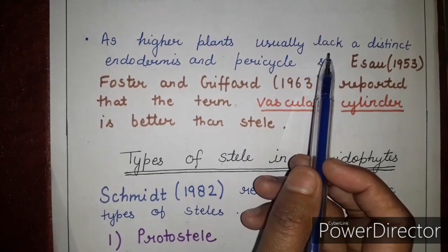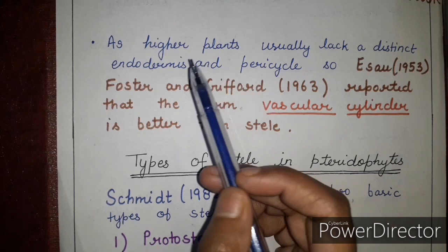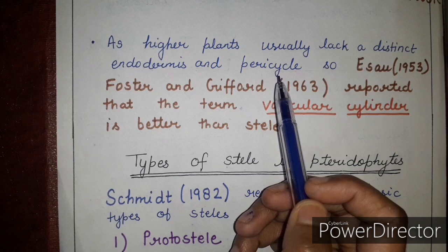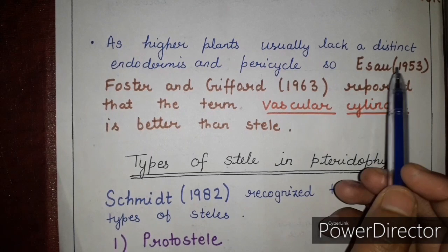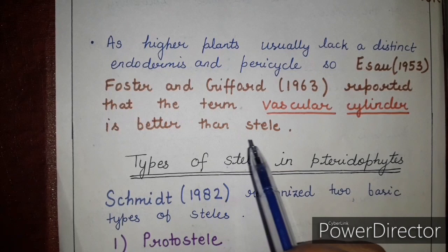Higher plants usually lack a distinct endodermis and pericycle. Endodermis or pericycle may be present in some cases or absent in most cases. Isau in 1953 and Foster and Gifford in 1963 reported that the term 'vascular cylinder' is better than 'stele' for higher plants.